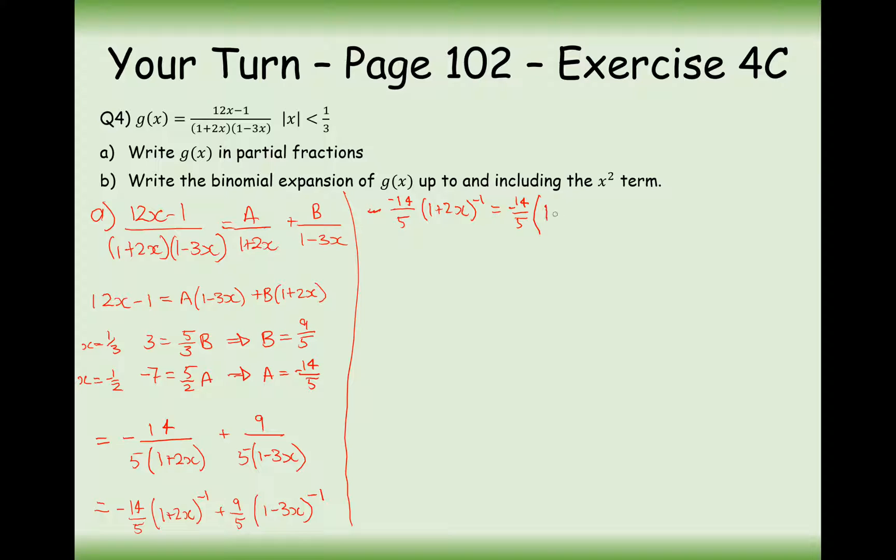And we're going to be substituting in 2x for x and minus 1 for n. So it's going to be 1 plus, let's just do it all in one go first. 2x times n, which is minus 1, plus minus 1 and reduce it by 1 minus 2, all over 2 factorial, times by 2x squared.